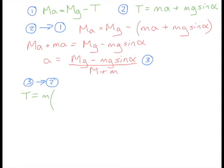Substituting for a here from equation 3: Mg take away mg sin α, all divided by big M plus little m. And then the second part of that equation from equation 2 is plus mg sin α.